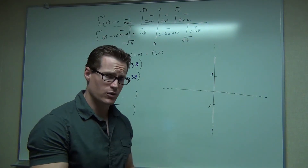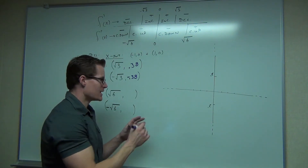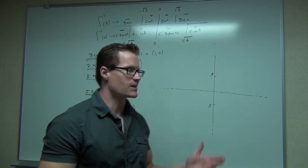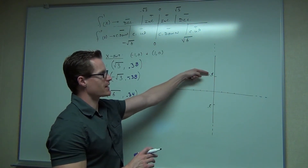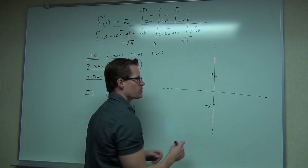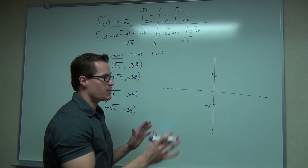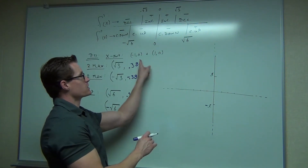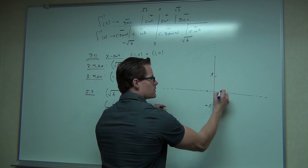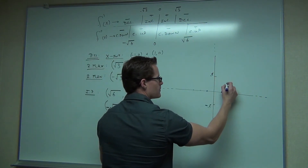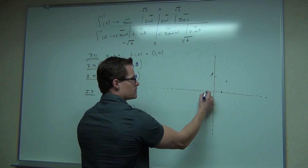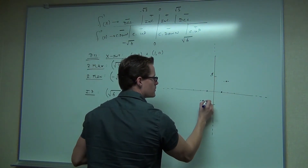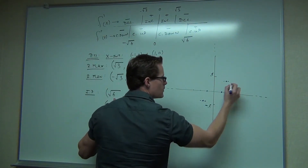When you take the square root of 6 and plug it into the original function, you get 0.34 and -0.34. They're very close points. The graph will look somewhat similar, but on the video I had those as 1 and -1. If you just change that to 0.5 and -0.5 and extend the graph even further, this is about what it looks like. You would still have your same x-intercepts, your relative max and relative min, and your inflection points — they're just really close together.